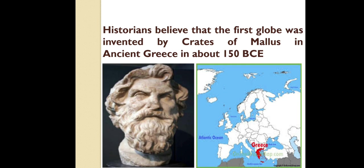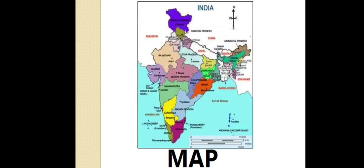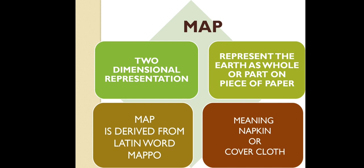Globe is very accurate and presents an accurate shape, but still it has some limitations. It represents only a small part of Earth, it is very big to carry so difficult to handle, and does not show detailed information on its surface. On the contrary, maps are two-dimensional representations drawn to represent the Earth as a whole or part of it on a piece of paper.